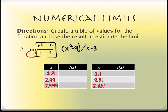We're going to use the table feature in the calculator and write down the y values. The first y value should be 5.9. The second is also 5.9, and the third is 5.9. They won't all work out so beautifully, but this one is very nice.